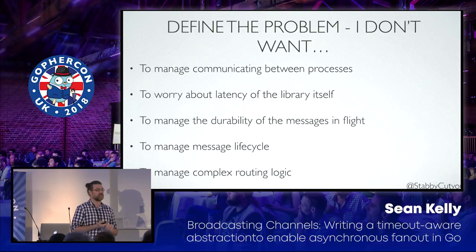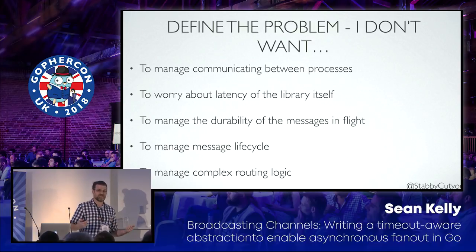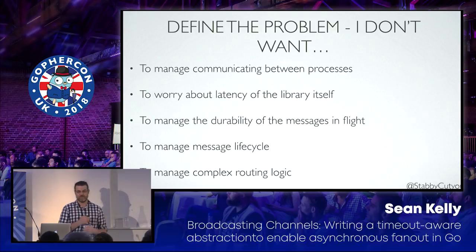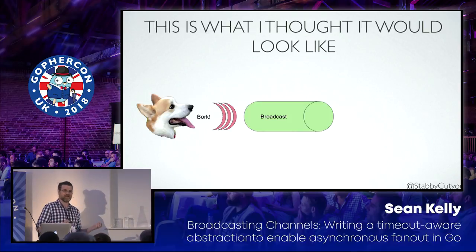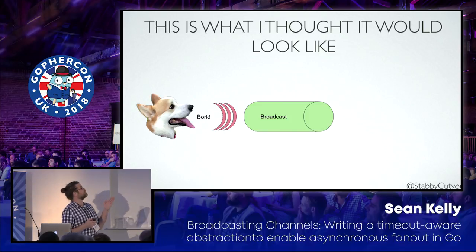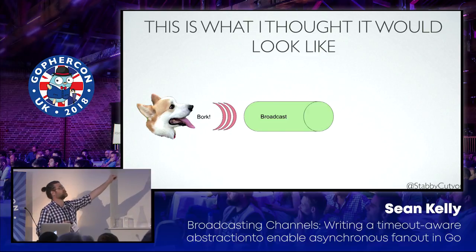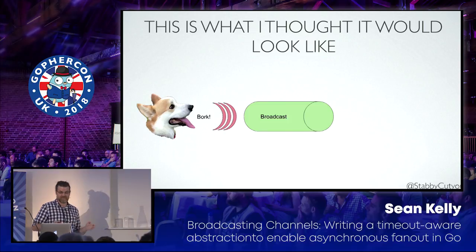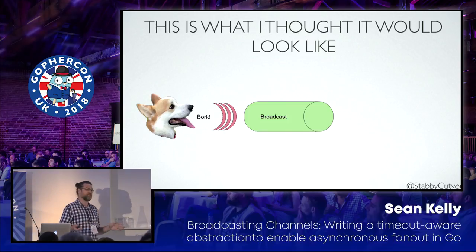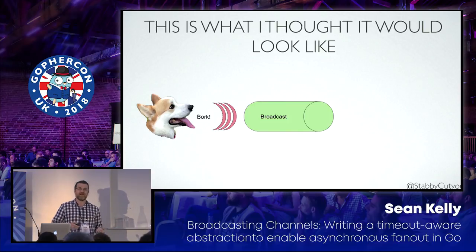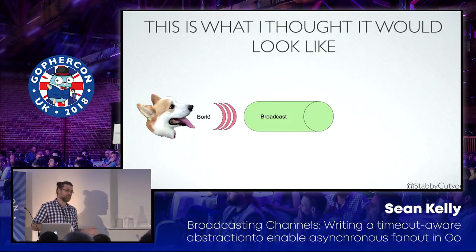I also didn't want to manage any complex routing logic — this is fan-out, so I'm just trying to do delivery, not intelligent delivery. When I started writing this library, I had this high-tech diagram featuring my dog. I had this idea of what it was going to look like — and I think that's common, because when you first set out to write code, you always have this picture in your head. That's usually not where it ends up.